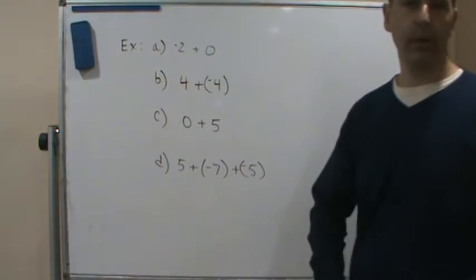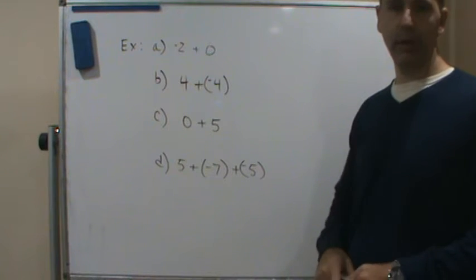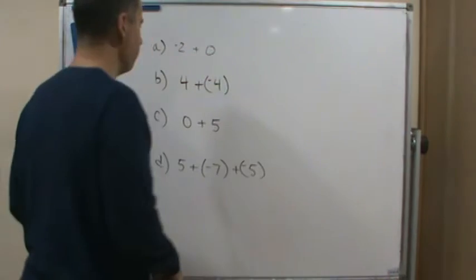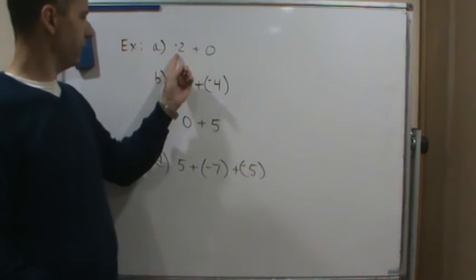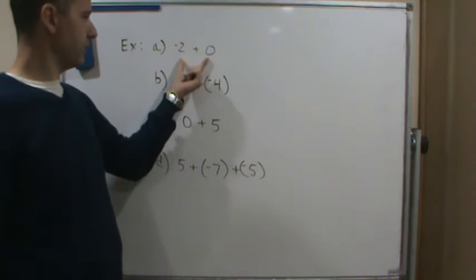Okay, so welcome back. Here's our last example for adding signed numbers. A couple of things I'm going to point out. So here we go, we're adding -2 + 0, right? So -2 + 0...